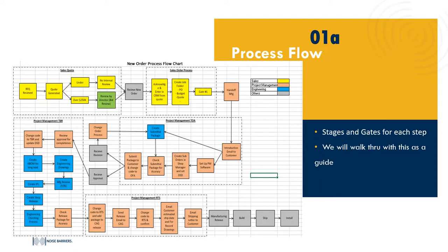Our order flow might seem a little messy at first glance — you may have seen this document on the door webinar from last month hosted by John. This order flow is nearly identical but quite simple once you get moving. We start in the gray box: 'New Order Received.' Everything before that is the request for quote, spec review, and internal quoting process. Once Noise Barriers receives a purchase order, we immediately enter it into our CRM tool and acknowledge the order.